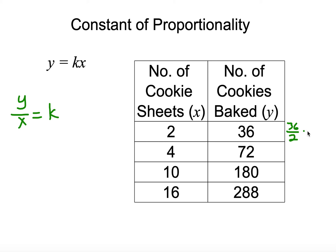36 divided by 2 is going to give us 18. Let's also try 72 divided by 4. That gives us 18. 180 divided by 10 gives us 18. And 288 divided by 16 gives us 18. So we know, because we did all of those, that our constant of proportionality is 18, or our unit rate. That means we can put 18 cookies on a sheet.